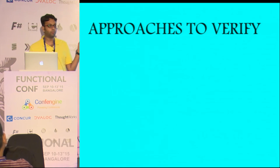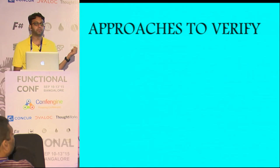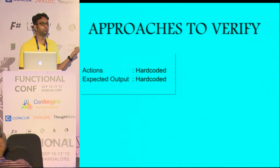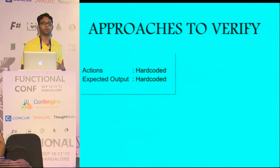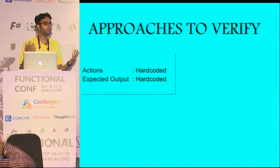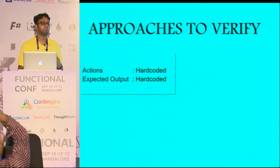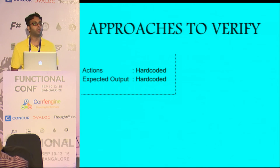What are the approaches we can take to verify something like this? Normally in unit tests we have hardcoded actions and hardcoded expected output — this is what I'll do, this is what I'll expect. But it limits the amount of combinations you can try — maybe five or six — and it becomes too cumbersome if you really want to try everything.